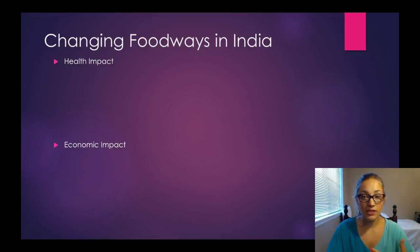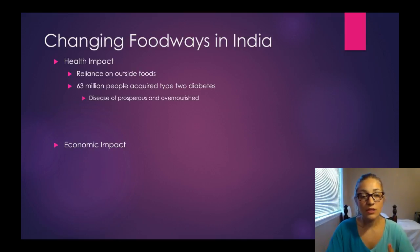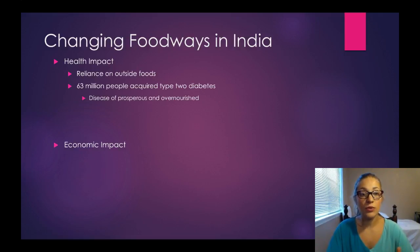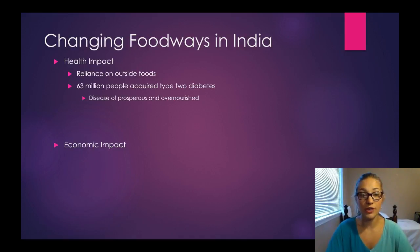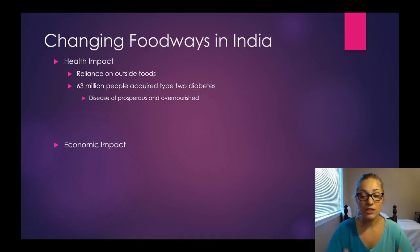There are a lot of different impacts in India. On the health side, this shift caused a reliance on outside foods. Once this happened, 63 million people acquired type 2 diabetes — what we can call a disease of the prosperous and overnourished — coming from eating unhealthy foods, too many fats, too many sugars.